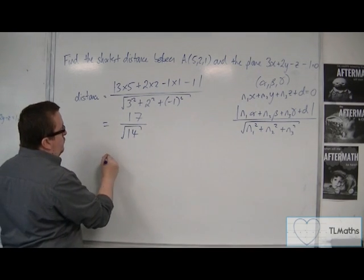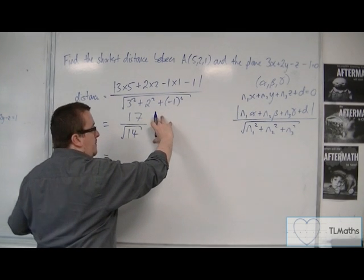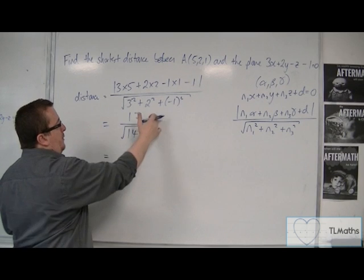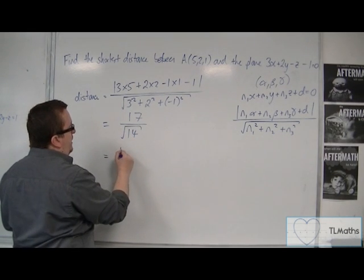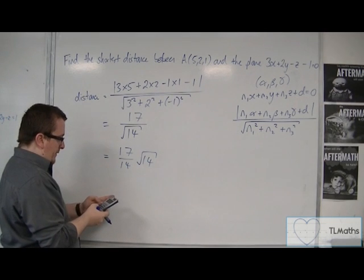The way that I wrote it last time was rationalized, where the denominator had been rationalised. So, you can multiply top and bottom by root 14, and you get 17 root 14 over 14, which is exactly the same answer.